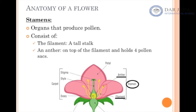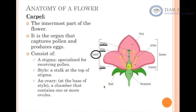Let's start with the stamen. The yellow structure you see in the figure is the stamen — this is the male part of the flower. It is made up of two parts: the anther and the filament. The filament is simply a long, tall stalk. The anther, which is the tip of the stamen, is the part that holds the four pollen sacs, so pollen is released from the anther of the stamen.